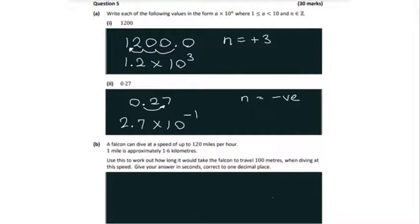Now on to B, and we have a lot of working out with numbers here. A falcon can dive at a speed of 120 miles per hour, and one mile is approximately 1.6 kilometers. So we're going to need this because we need to find out how long it will take for the falcon to travel 100 meters in seconds.